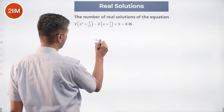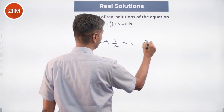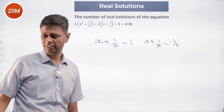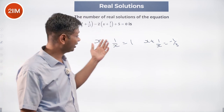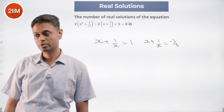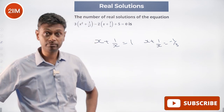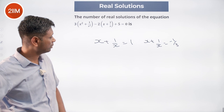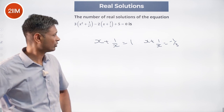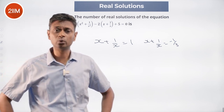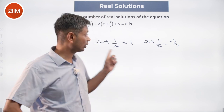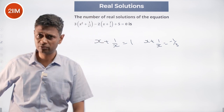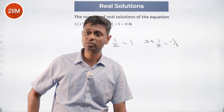Now we come to the interesting part. x plus 1 by x equals 1, or x plus 1 by x equals minus 1 by 3. But x plus 1 by x is always greater than or equal to 2 or less than or equal to minus 2. This does not yield roots. This does not yield roots. So x plus 1 by x equal to 1 does not have real solutions, and x plus 1 by x equal to minus 1 by 3 does not have real solutions. We should have 0 real solutions.